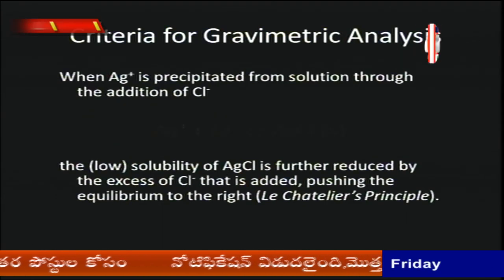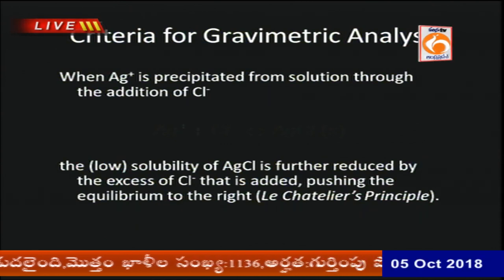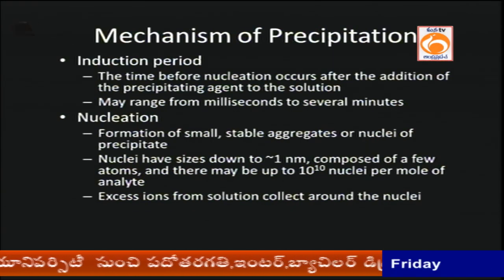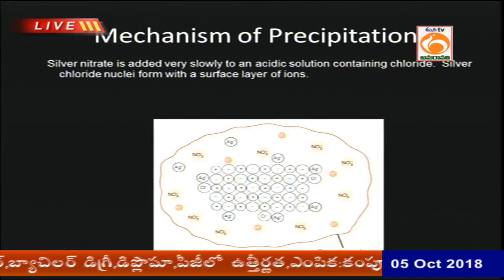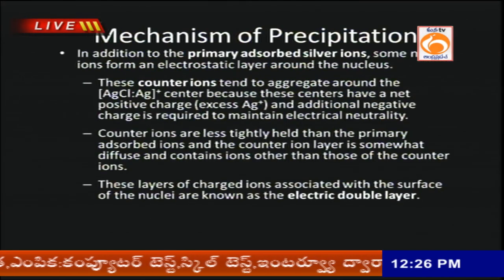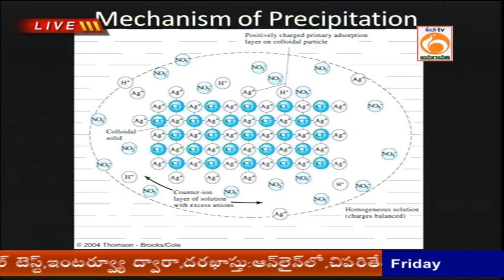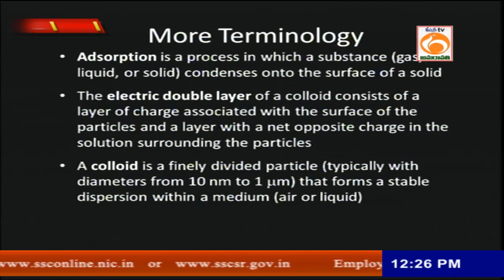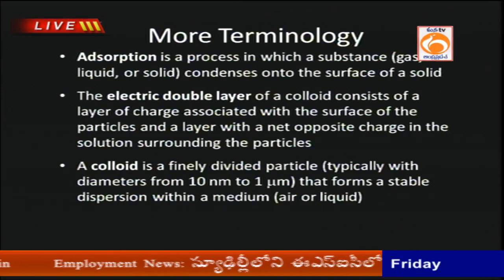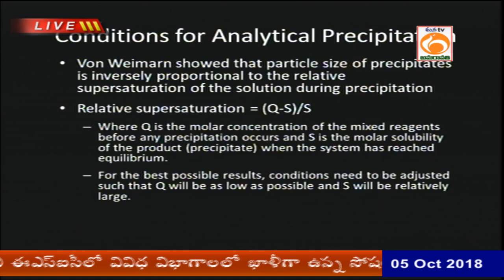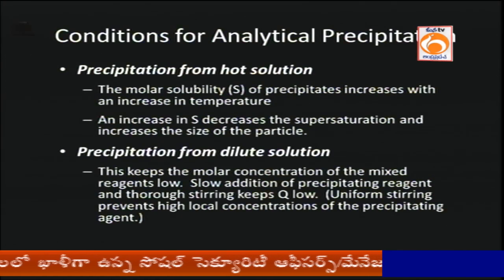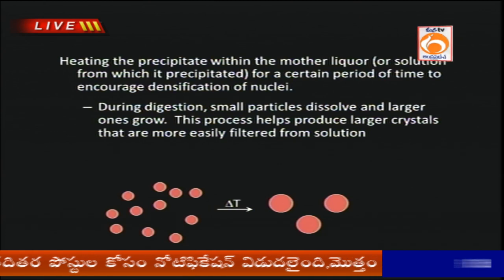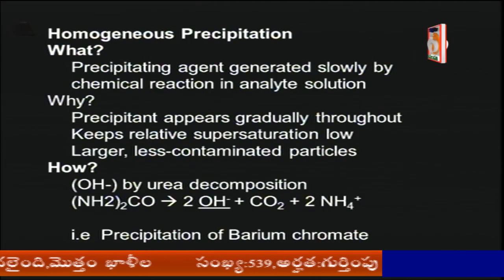Similar gravimetric analysis can be done for silver chloride, and different mechanisms are involved in precipitation including induction period, nucleation, and how silver nitrate precipitates as silver chloride by adding hydrochloric acid. Important terminology in gravimetric analysis includes: precipitation from hot solution, precipitation from dilute solution, pre-precipitation, and post-precipitation.